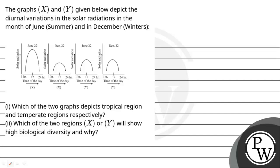Hello, let's read the question. The graphs X and Y given below depict the diurnal variations in the solar radiations in the month of June (summer) and in December (winters). Here we have four graphs. The first part asks which of the two graphs depicts tropical region and temperate region respectively.